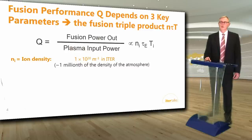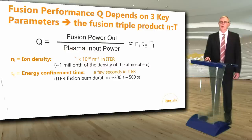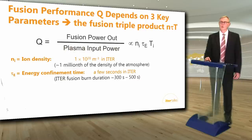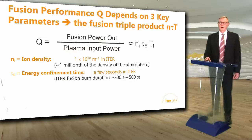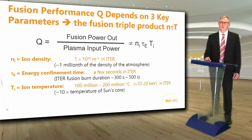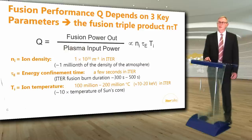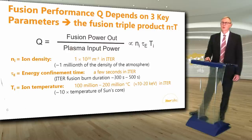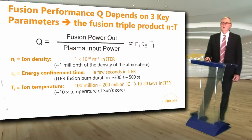We will inject cryogenic frozen pellets of deuterium and tritium isotopes of hydrogen to fuel the plasma. Tau E is the energy confinement time of the plasma — the time it takes energy to diffuse out — which will be a few seconds in ITER, with a fusion burn duration of 300 to 500 seconds. We will use superconducting magnets to produce magnetic fields to confine the plasma. TI is the plasma ion temperature, which will be 100 to 200 million degrees in ITER, or 10 to 20 kilo-electron-volts.